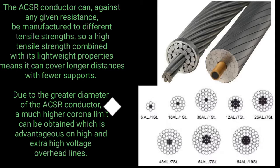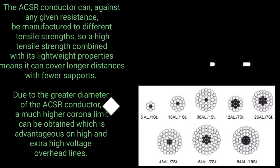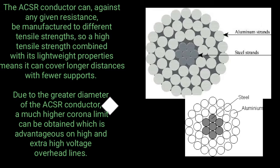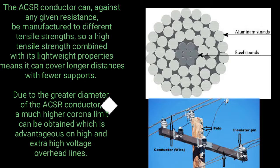The ACSR conductor, for any given resistance, can be manufactured to different tensile strengths. High tensile strength combined with its lightweight properties means it can cover longer distances with fewer supports. Due to the greater diameter of the ACSR conductor, a much higher current limit can be obtained, which is advantageous for high and extra high voltage overhead lines.